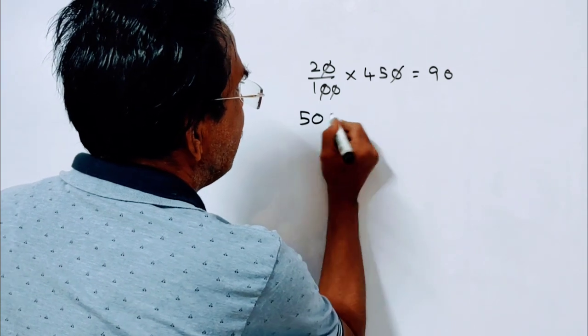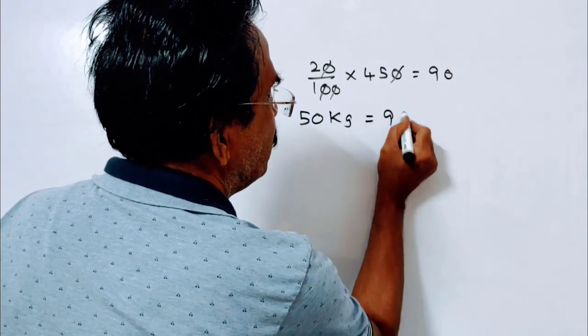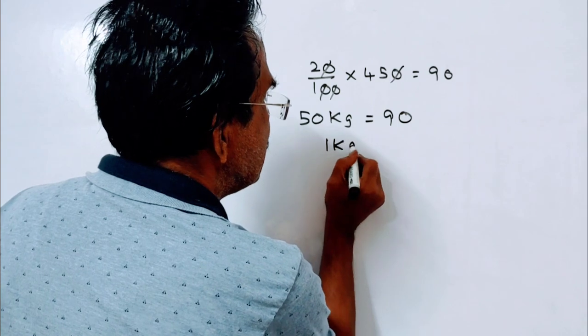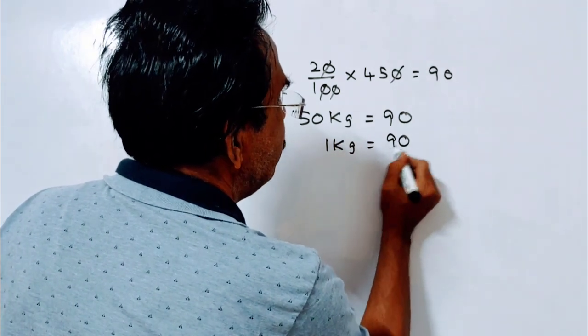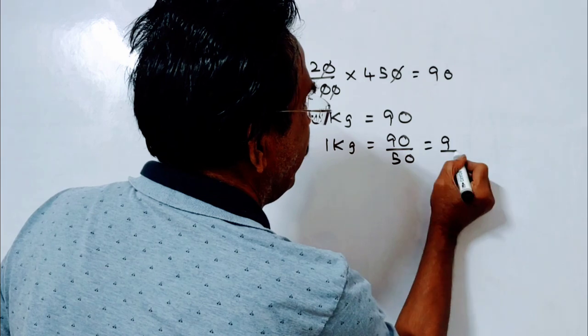So, 50 kg is equal to 90 rupees, friends. 1 kg is equal to 90 by 50, that is equal to 9 by 5.